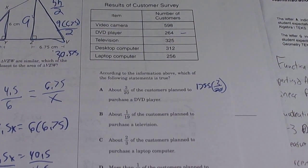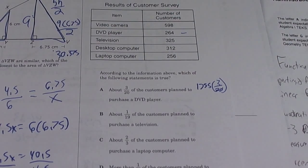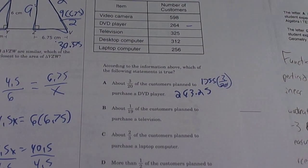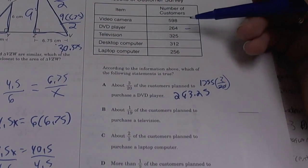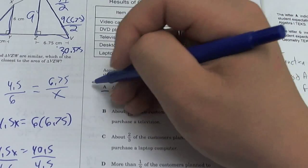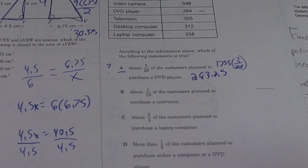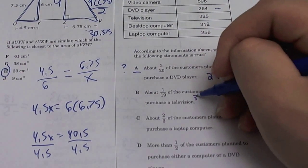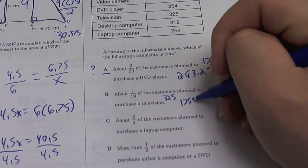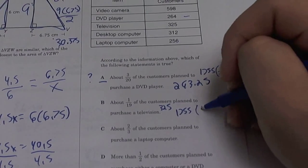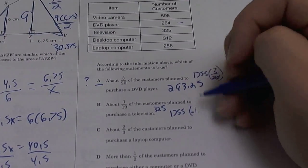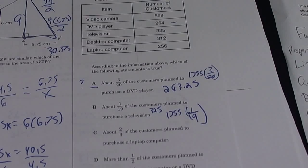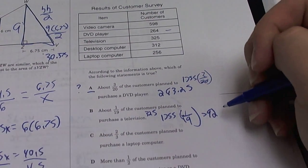About 1/19 of customers plan to purchase a television. Television is 325. So again, what do we do? We do 1755 times 1 over 19, and you do that in a calculator and you get 92, which is definitely not anything close to 325. So that's wrong.